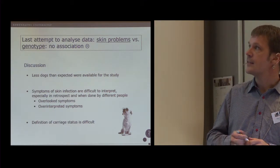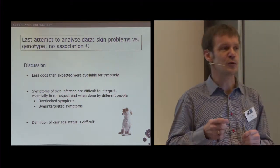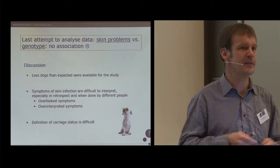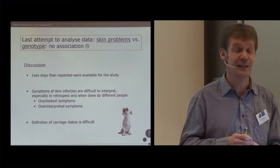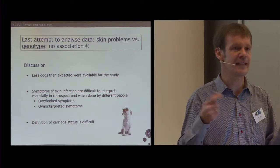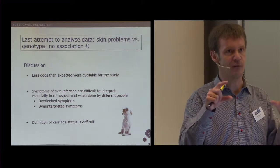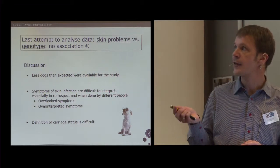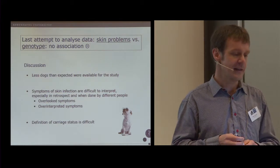Another problem is that these symptoms of skin infection are quite difficult to interpret. We asked the owners to do it in retrospect, to think about if the dog had had some kind of skin symptom within their lifetime. That is difficult even for veterinarians. So this is a shortcoming. What is a skin symptom? It could be many different things. Even though we actually explained to the owner and provided them with a picture of what it should look like, it may have been a shortcoming of the study. Some may have overlooked symptoms and some may have underestimated symptoms.